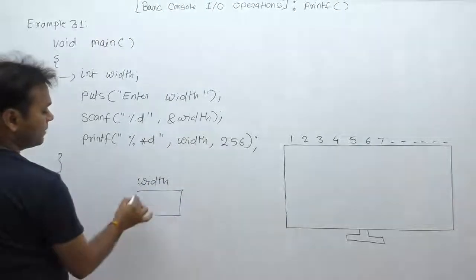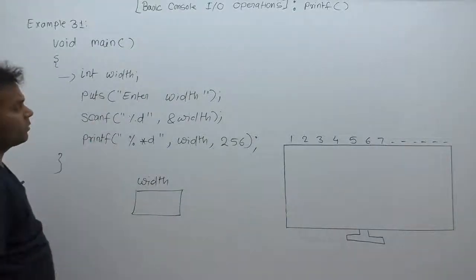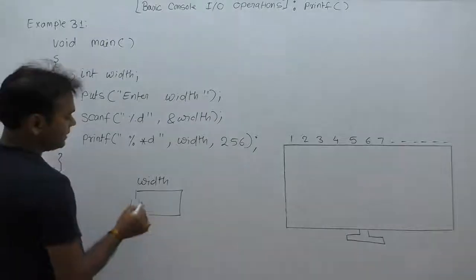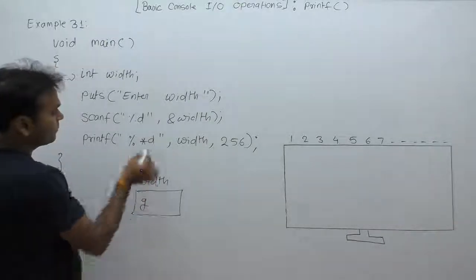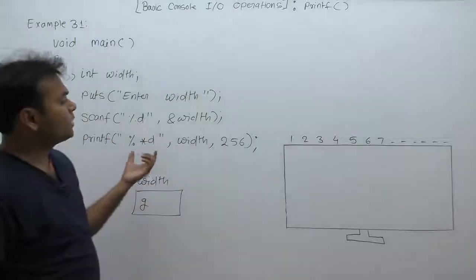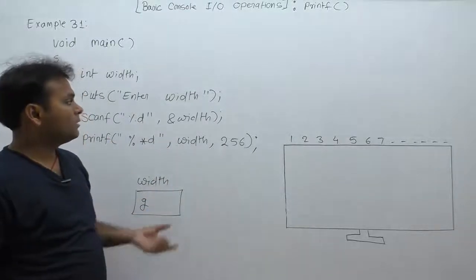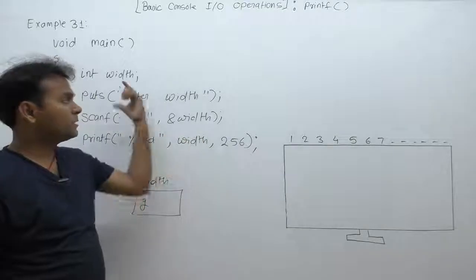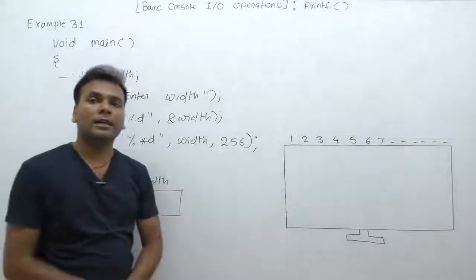Width has two bytes because the type of width is integer, with initial value as garbage. Next one, 'enter width'. Let's see - we are not able to justify what is the current width based on the source code, meaning the current program.